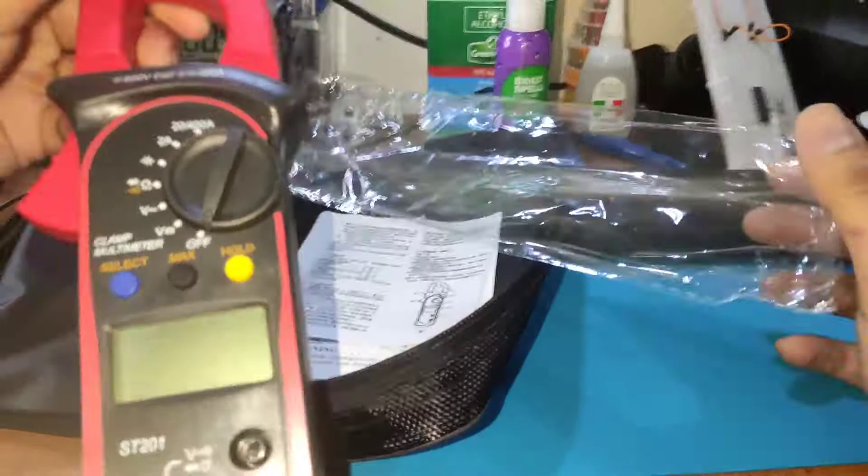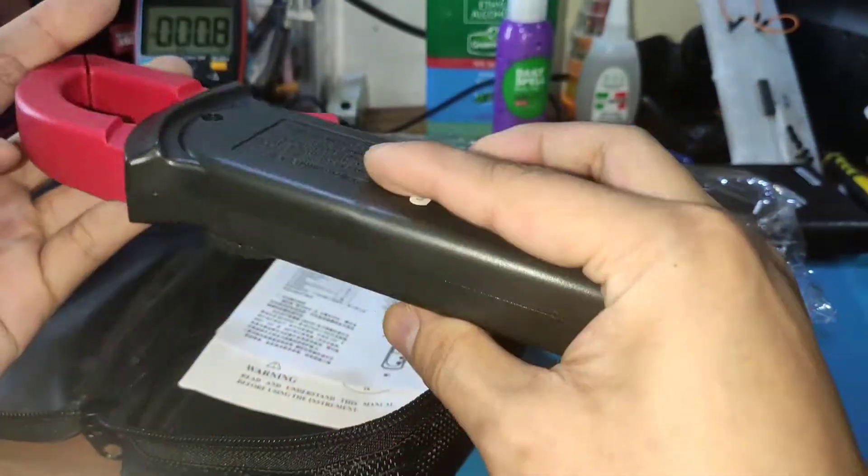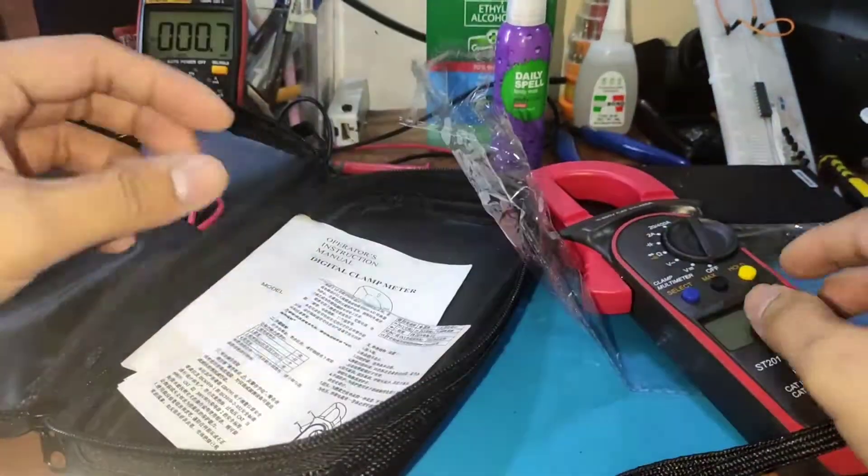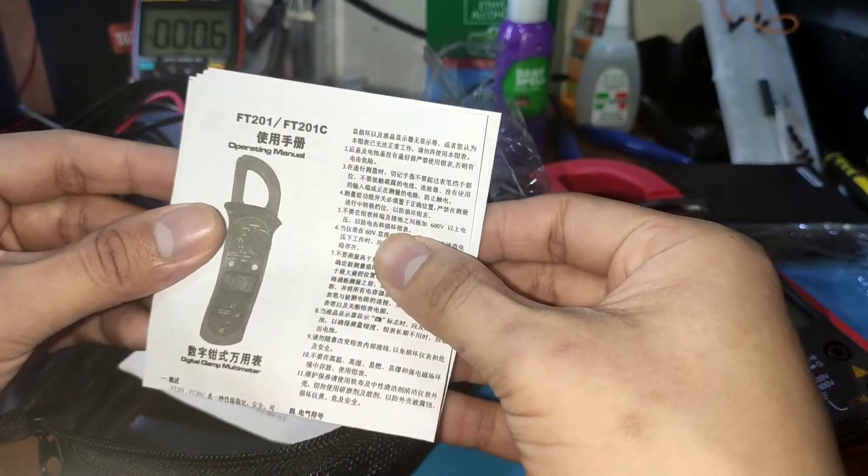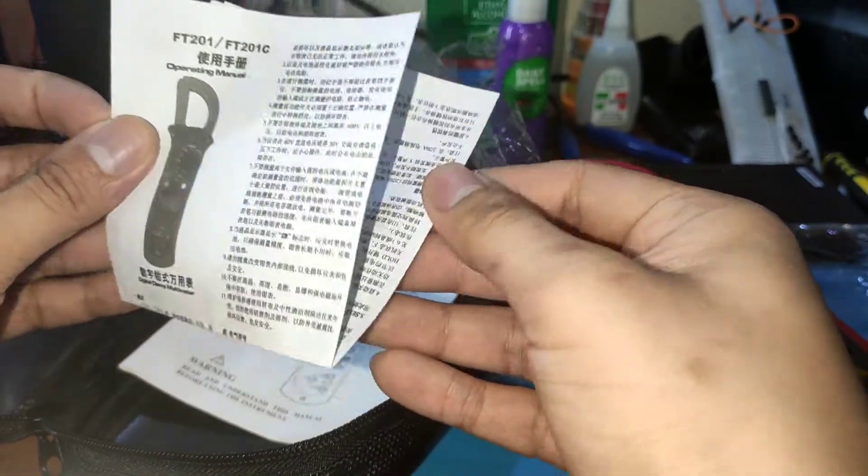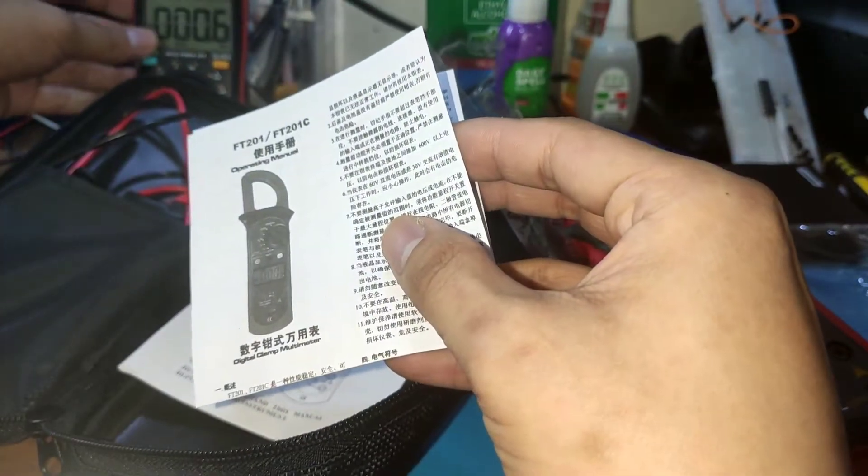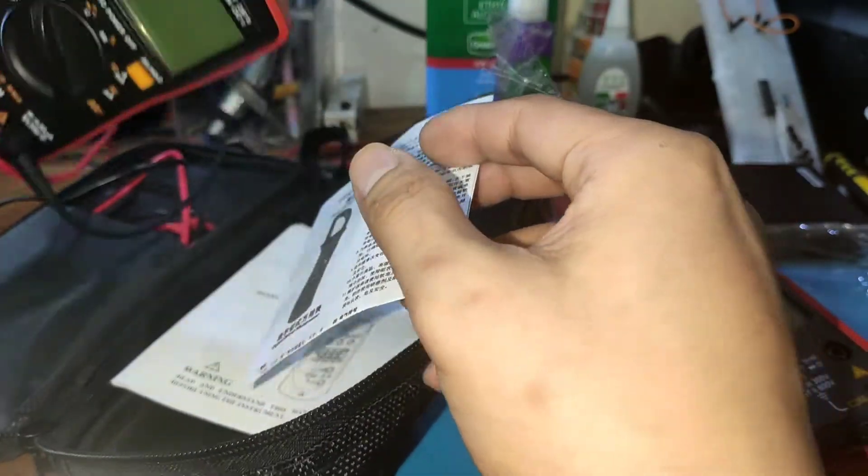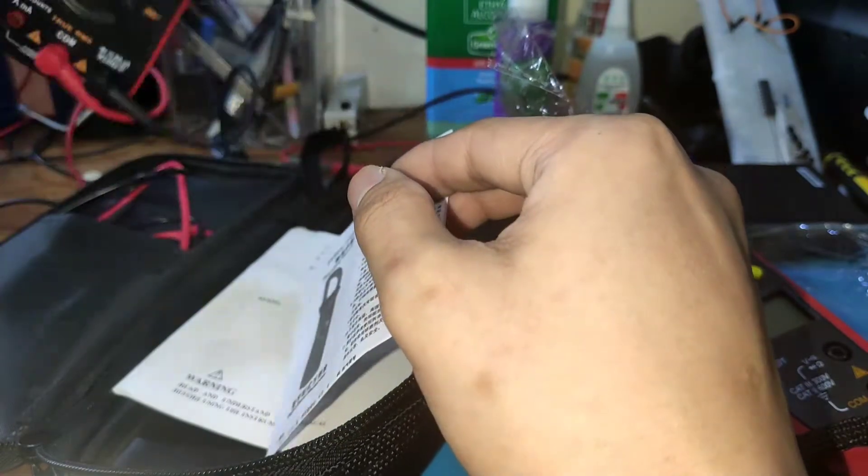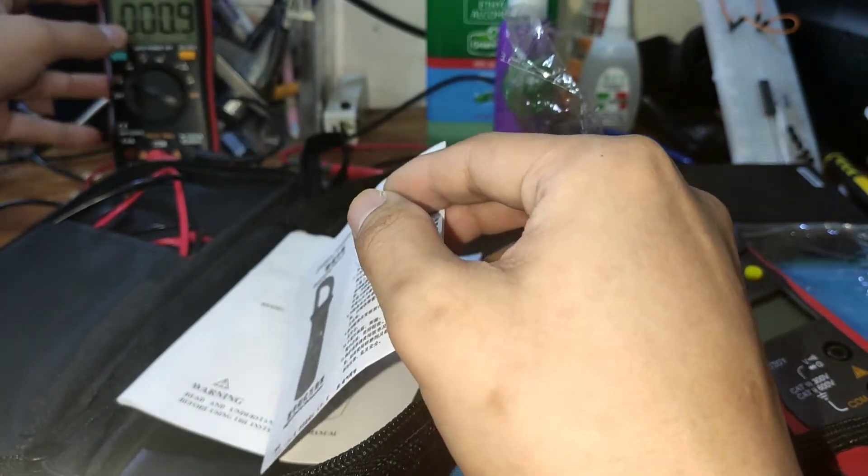You'll have the multimeter and some of the manuals. It's supposed to be the Aneng. I'm not sure how to pronounce it but this is the brand that I bought from Shopee.